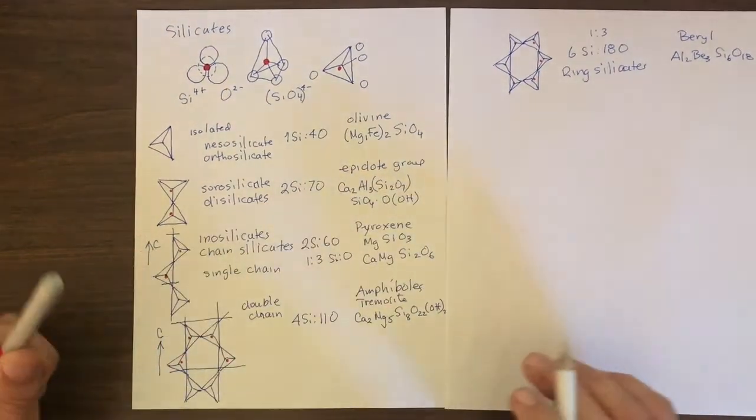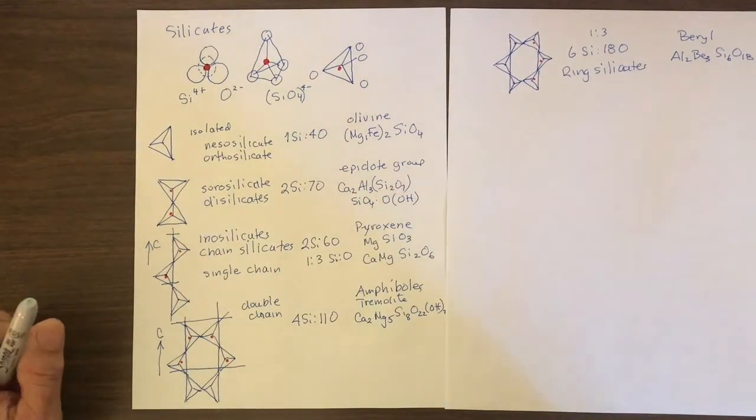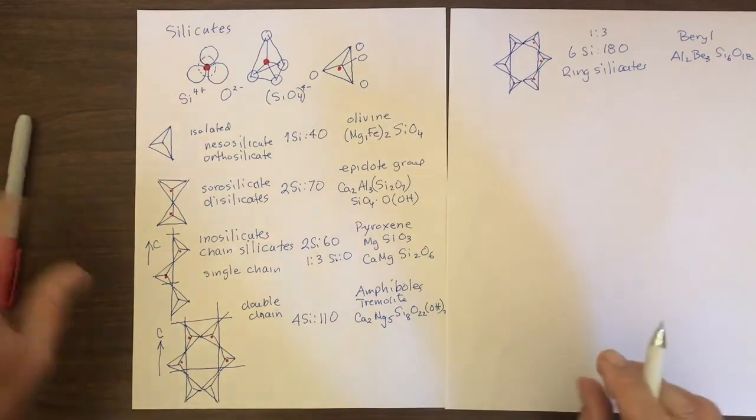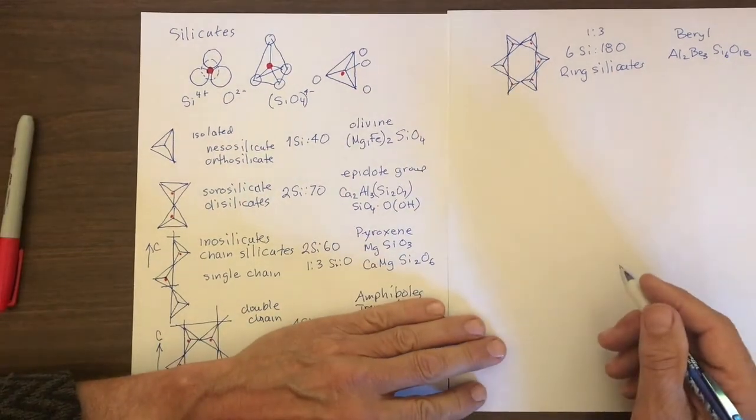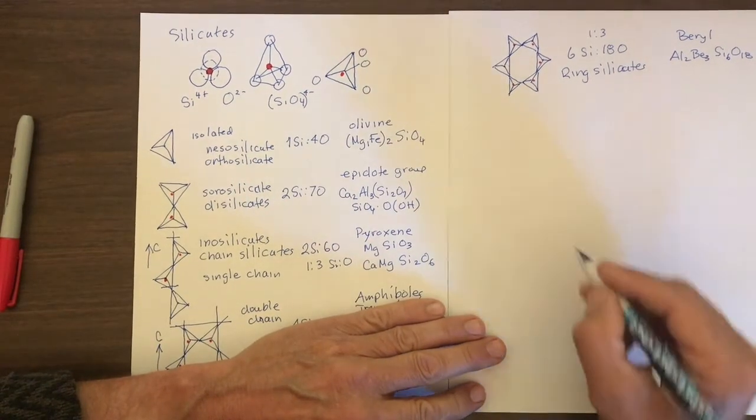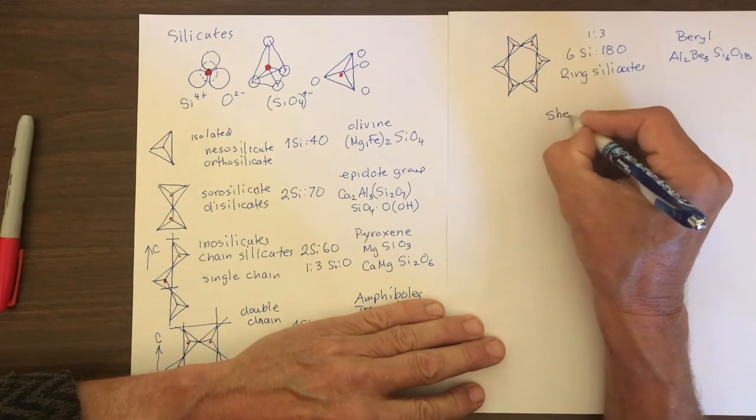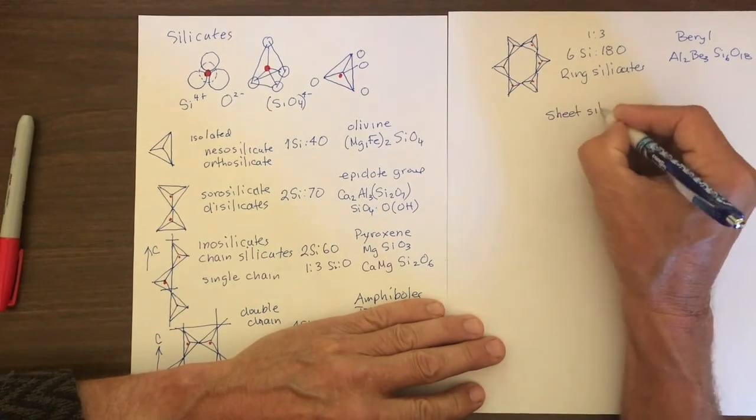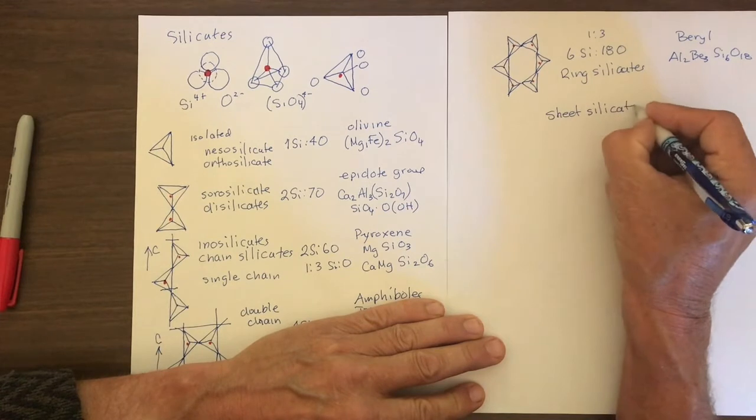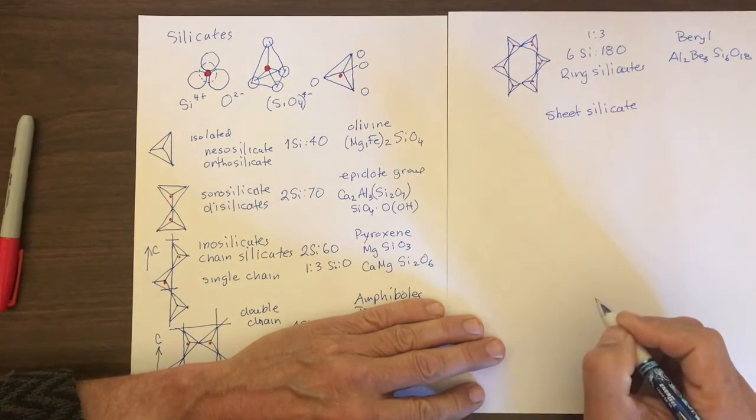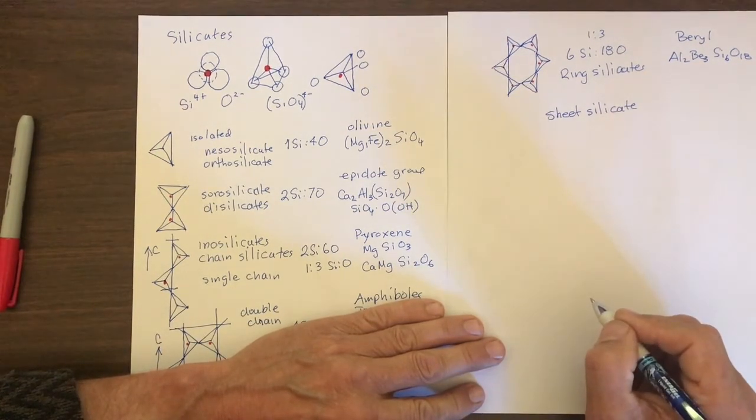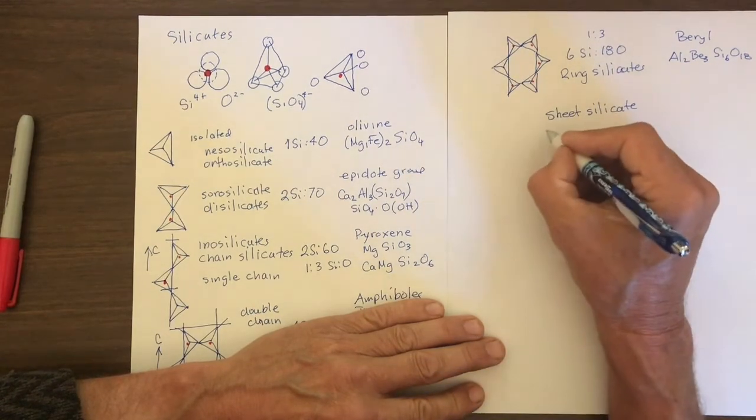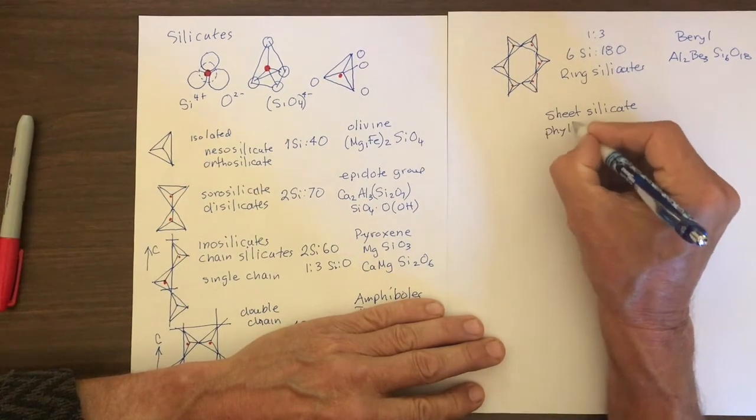as the inosilicate pyroxene group. The next type we're going to look at are sheet silicates, where the tetrahedral silicas are linked to other silicas in 2D sheets. They're also called phyllosilicates.